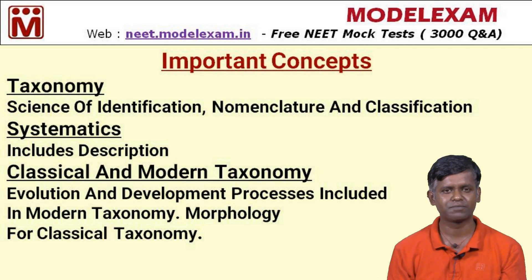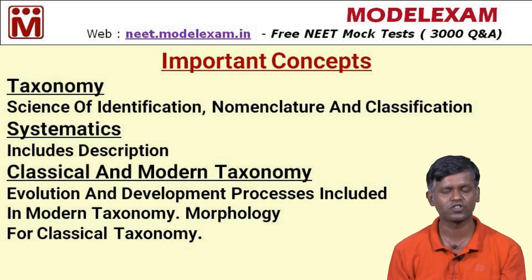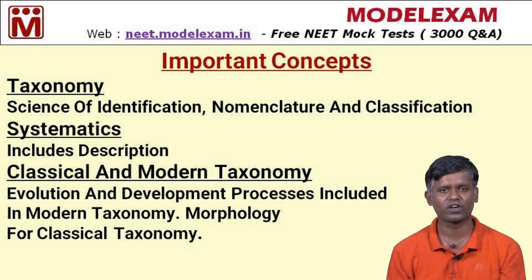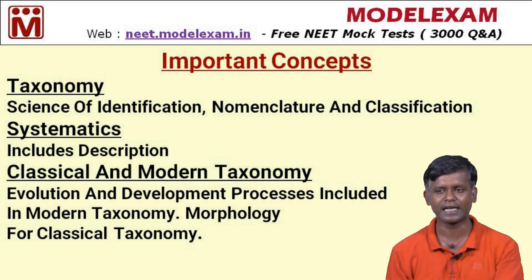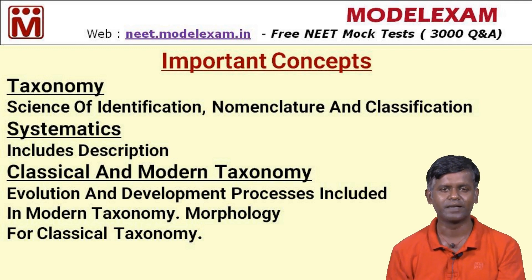There are two types: classical taxonomy and modern taxonomy. Classical taxonomy is established from primitive ages and relies basically on morphology — observing the physical appearance of plants, bacteria, or animals. Modern taxonomy has evolved from classical taxonomy and additionally includes evolutionary relationships and developmental processes, giving equal importance to both morphology and evolutionary history.